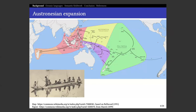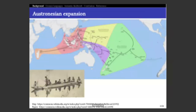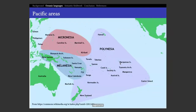Now we're going to talk about a subgroup of languages. Austronesian is the whole family, but if we focus on a smaller part of this geographic area, we find a subgroup of oceanic languages. In the Pacific we have three geographic areas — Micronesia, Melanesia, and Polynesia — and oceanic languages spread across the whole of this area.